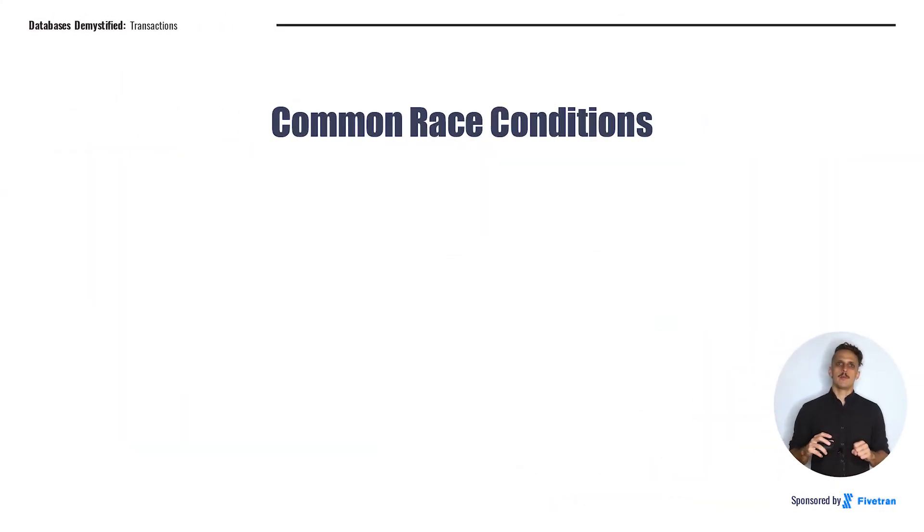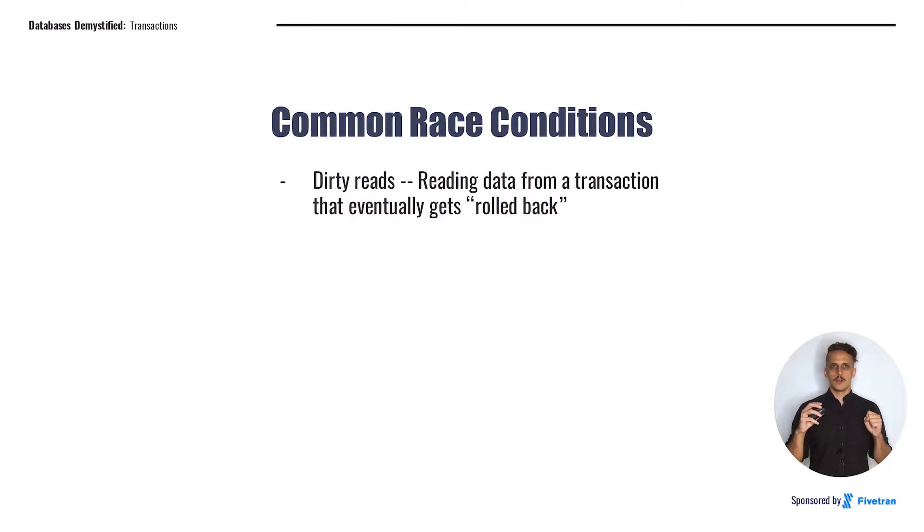There are three really common race conditions that people talk about a lot, especially in the context of databases. You don't really need to know in super precise detail what each of these different types of race conditions are, but it is important that you know what race conditions are in general. And it's important that you get a sense for what the different types of issues are the database might encounter. First, we've got dirty reads, which refers to reading data from a transaction in progress that will eventually be rolled back.